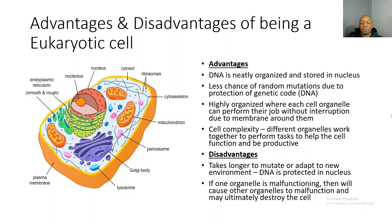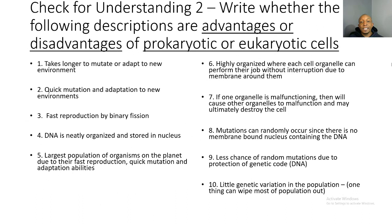Now the disadvantages of eukaryotic cells. It takes longer to mutate or adapt to new environments because the DNA is protected inside the nucleus, making it harder to change or mutate in response to a new environment. Additionally, if one organelle is malfunctioning, it will cause other organelles to malfunction and may ultimately destroy the cell — a domino effect where all organelles need to be functioning properly for the whole cell to survive.